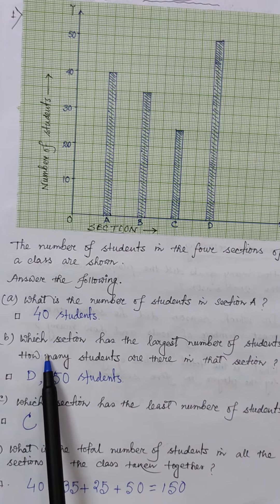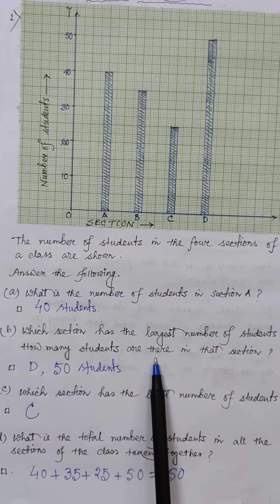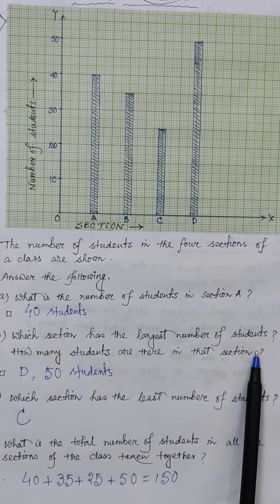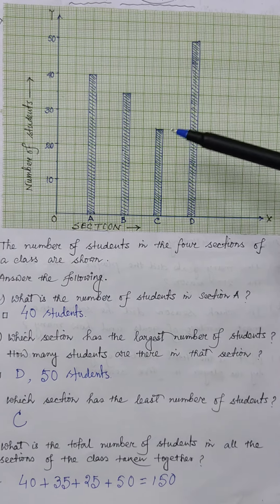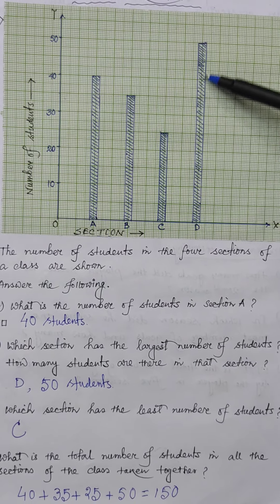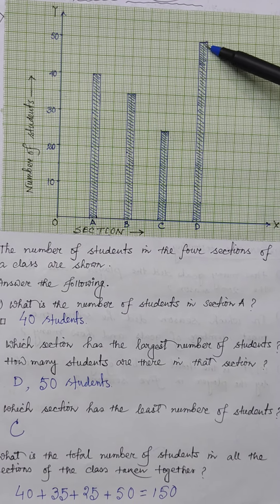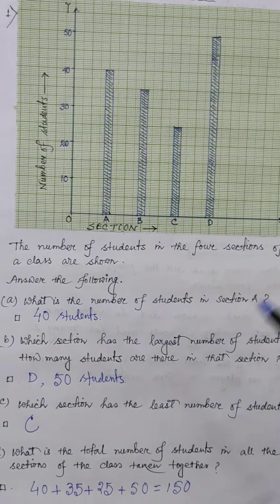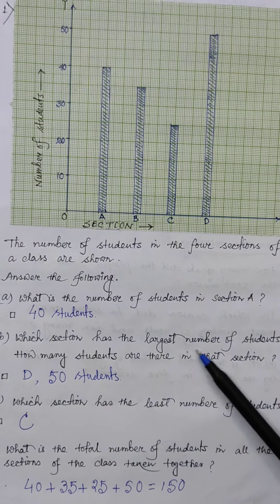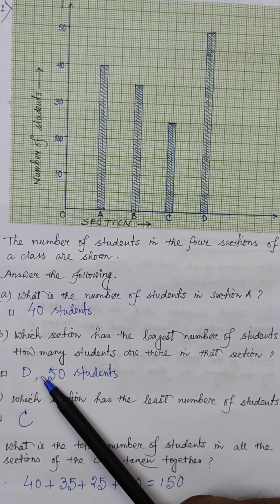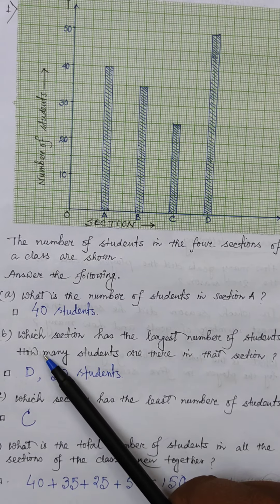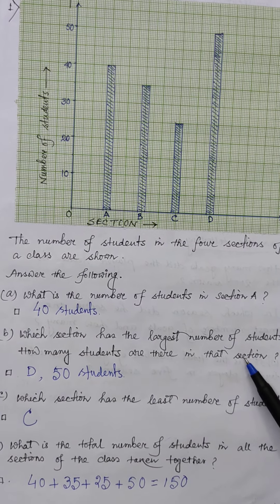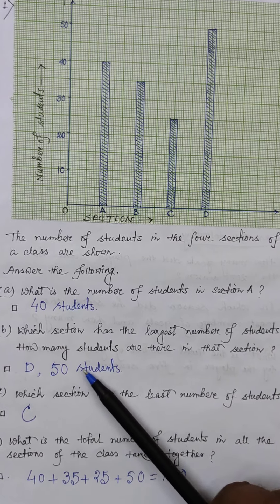Question b: Which section has the largest number of students? In which section is the height of the bar maximum? Section D, and up to 50. So section D has the largest number of students, with 50 students.